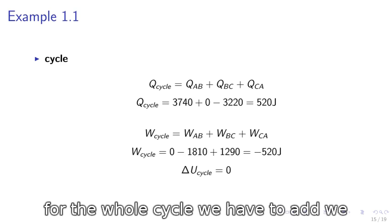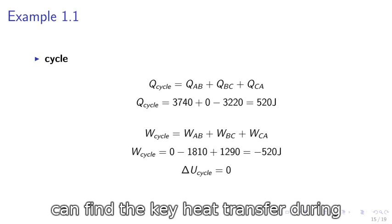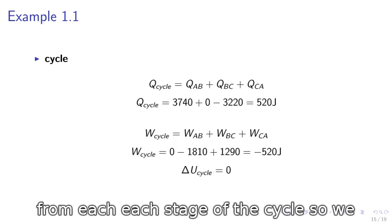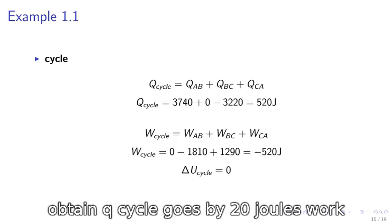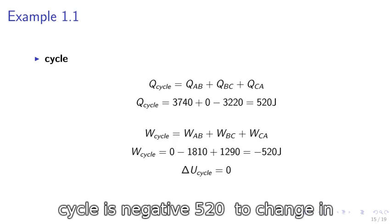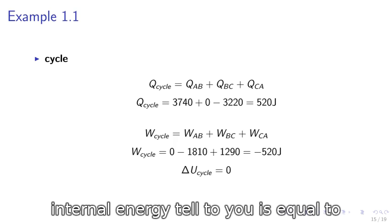For the whole cycle, we can find the heat transfer during the cycle by adding up the contributions from each stage. We obtain Q cycle equals 520 joules. Work done by the system during the cycle is negative 520 joules. And the change in internal energy delta U is equal to zero.